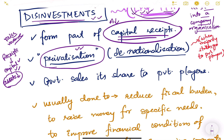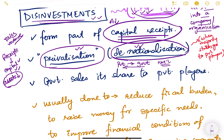What is disinvestment? The receipts form part of capital receipts, as already mentioned, because it results in a reduction of assets. Privatization is one word, but privatization is strictly not disinvestment. Every disinvestment is not privatization, but every privatization is disinvestment. This you have to keep in mind.